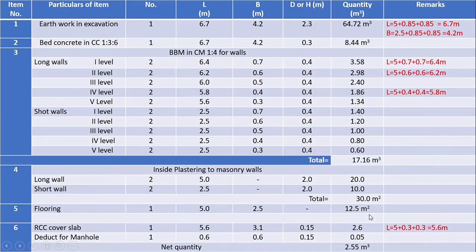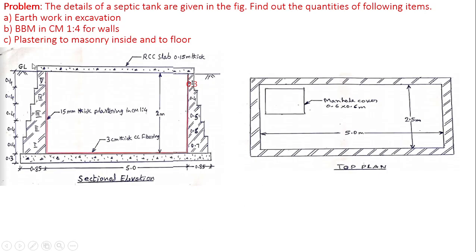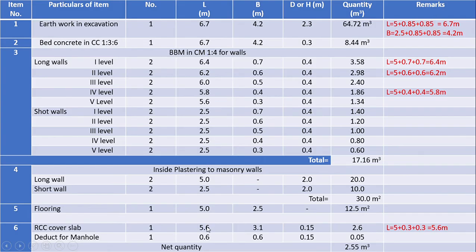Item 6: RCC cover slab. Outer to outer length of cover slab is equal to inside length of tank plus wall thickness at the top at both ends, that is equal to 5 plus 0.3 plus 0.3, equal to 5.6 meters. The breadth of slab is inside width plus wall thickness at both ends, that is equal to 2.5 plus 0.3 plus 0.3, equal to 3.1 meters.